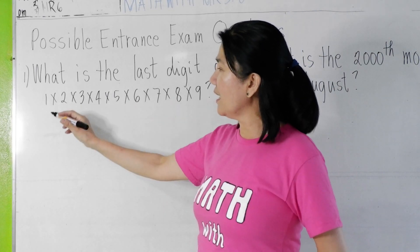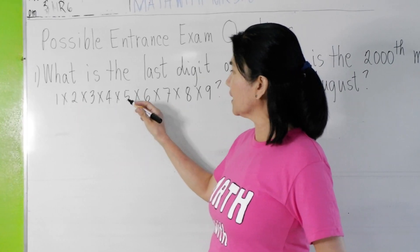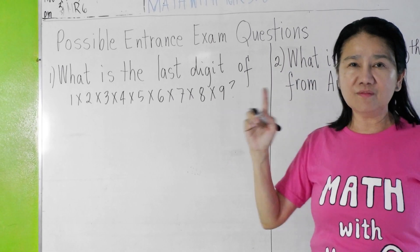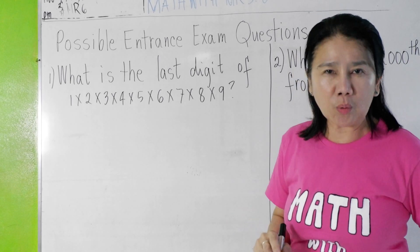What is the last digit of 1 times 2 times 3 times 4 times 5 times 6 times 7 times 8 times 9? I'll give you 5 seconds to answer it. Go.